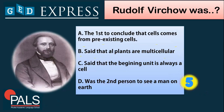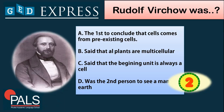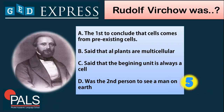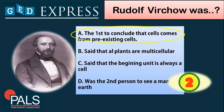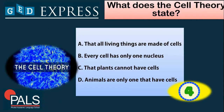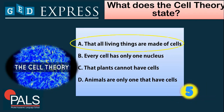Next, we have Rudolf Virchow. What is his contribution to the cell theory? The answer is A — he was the first to conclude that cells come from pre-existing cells. Next question: what does the cell theory state? A. That all living things are made of cells. B. Every cell has only one nucleus. C. Plants cannot have cells. D. Only animals have cells. The right answer is letter A.